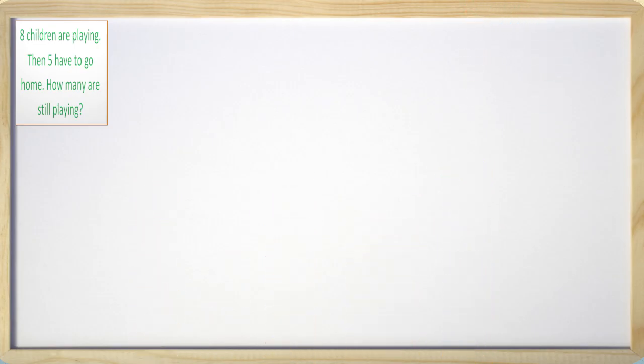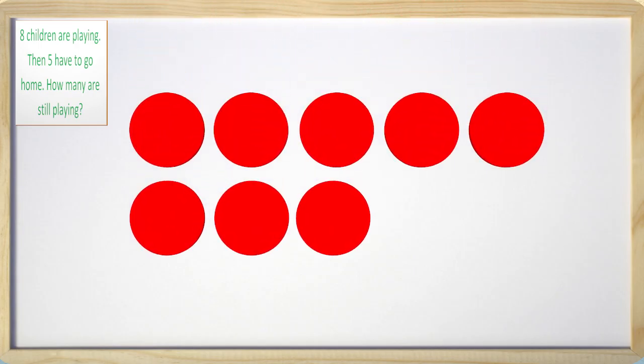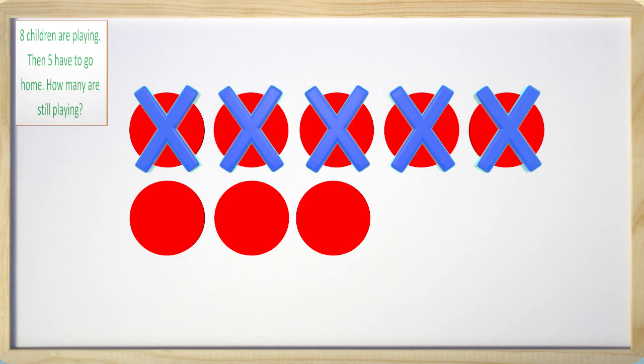To check our work, we can use a circle drawing. Here we have eight circles to show the total amount of kids we started with. Now we subtract five circles because five of the kids went home. This leaves us with three circles which proves our answer.